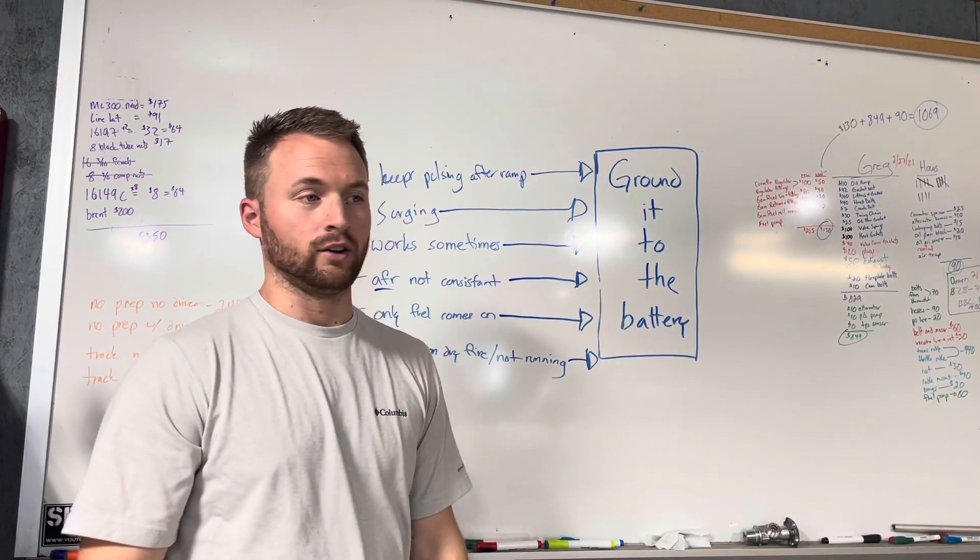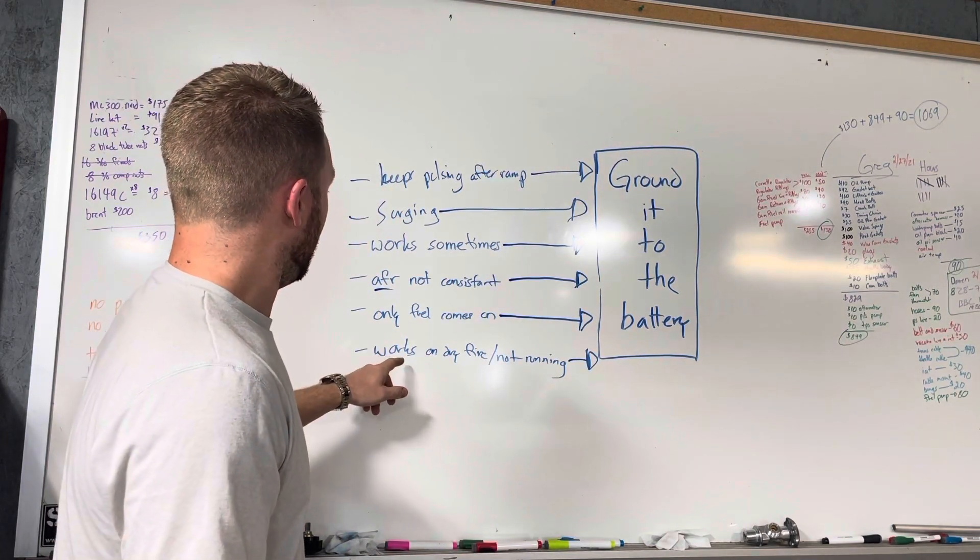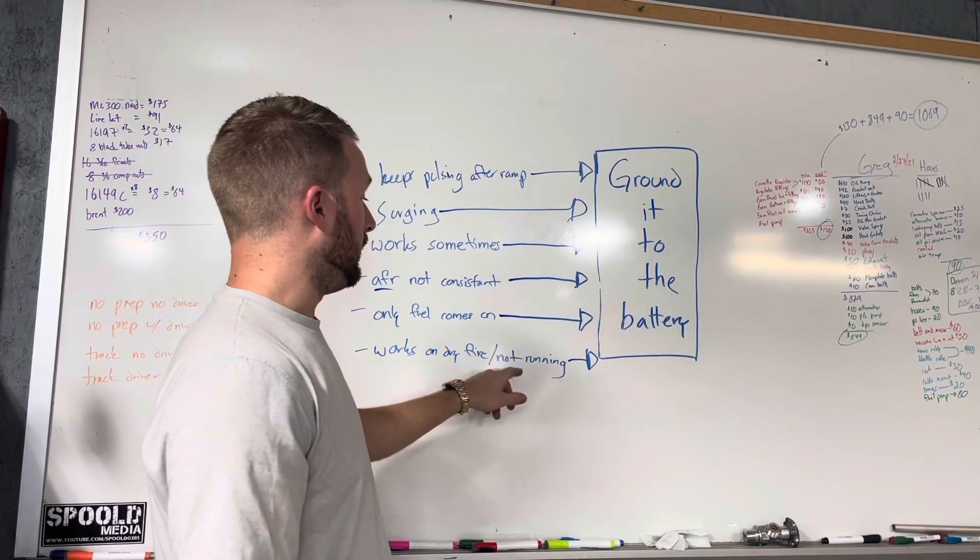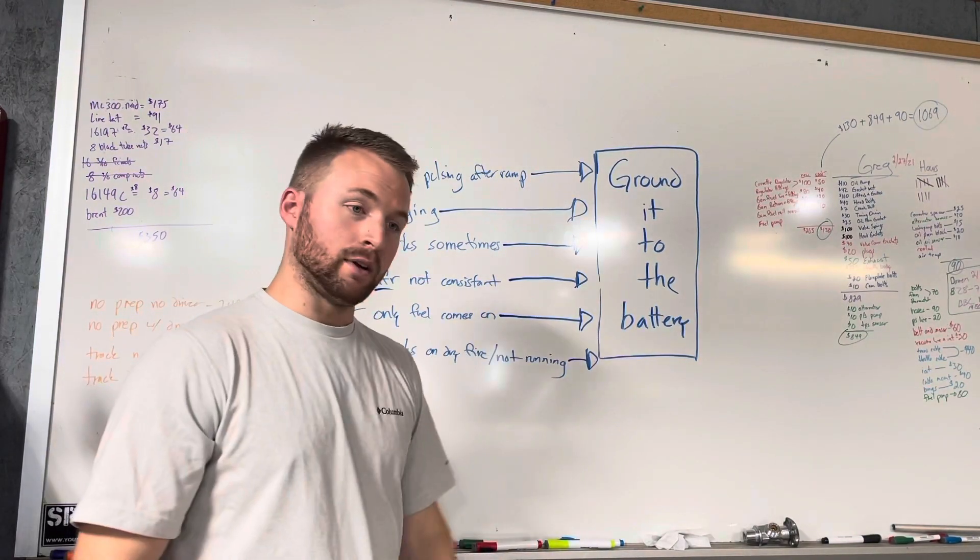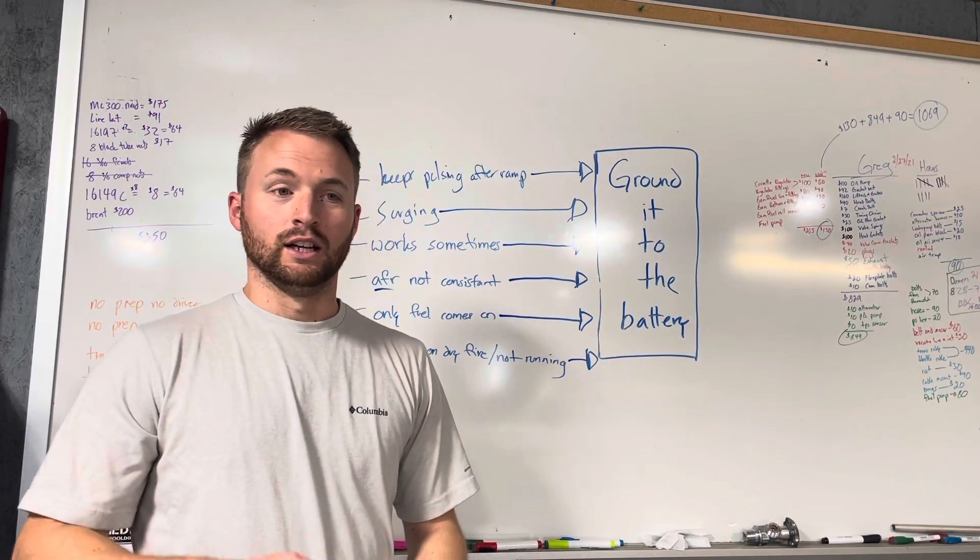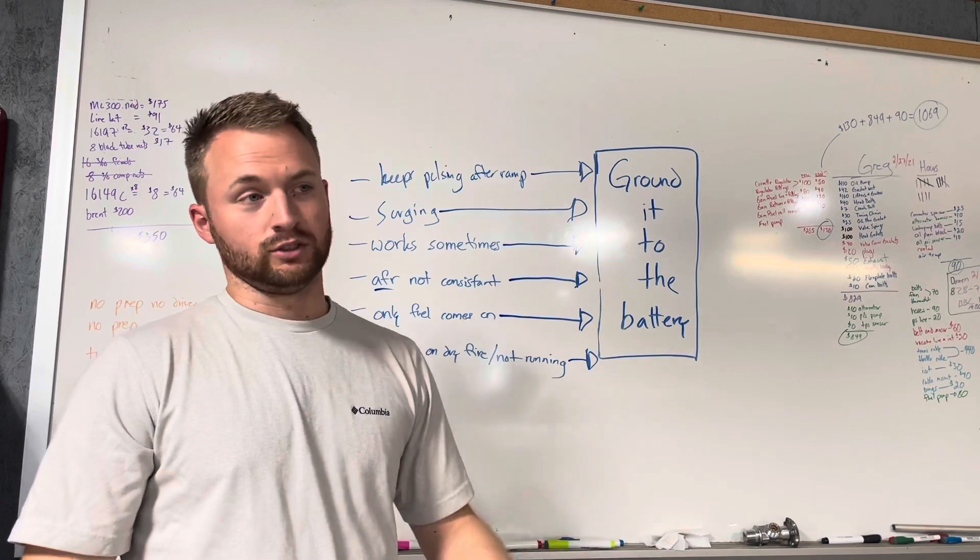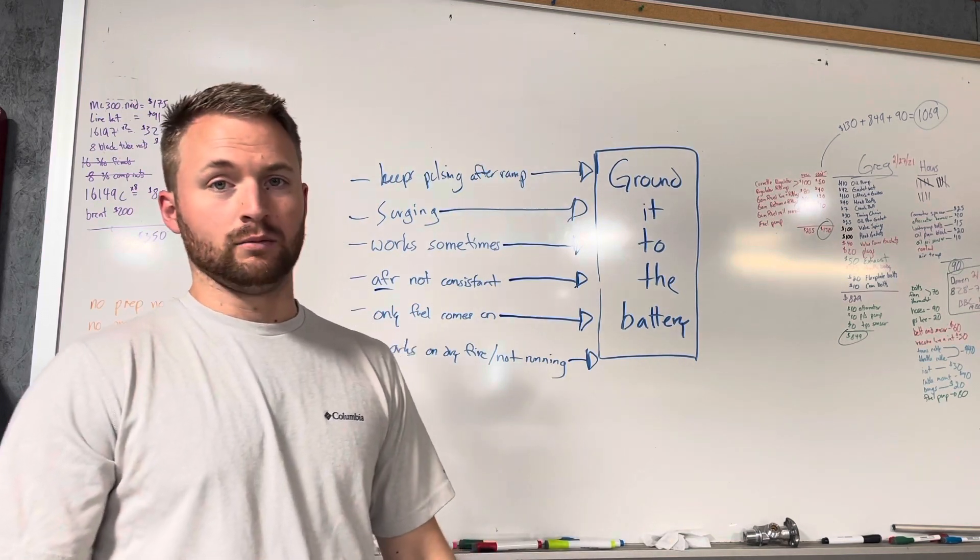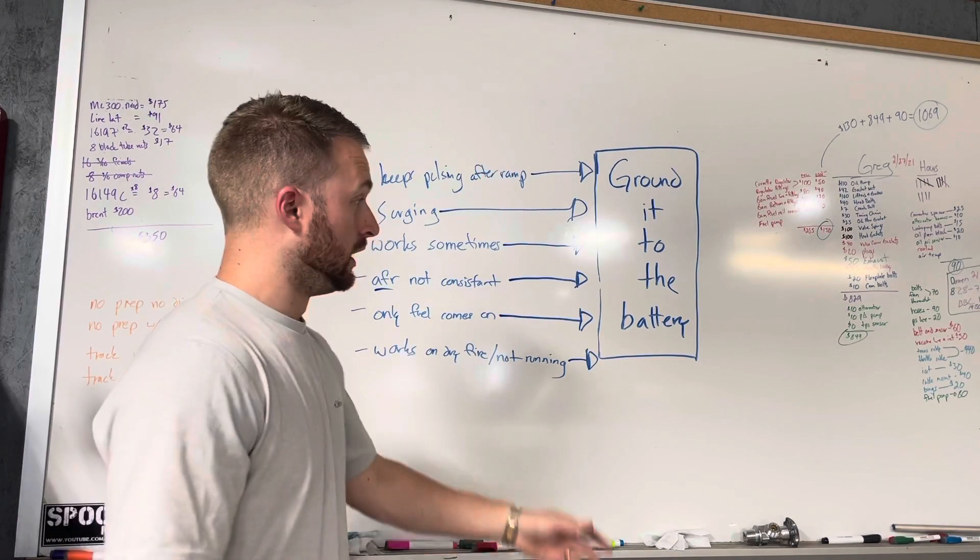If it works on a dry fire and not while it's running, that is it, it's got to be grounded to the battery. So if you're sitting here in the shop, you check it a thousand times, everything works, you go to the track and nothing works, come back to the shop, you check it again, everything works, you go back to the track, nothing works, you should ground your progressive controller directly to the battery.